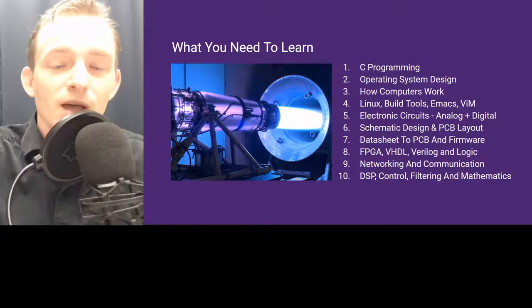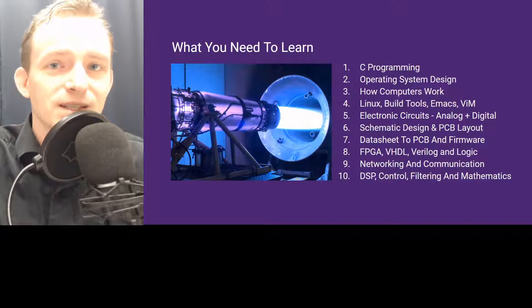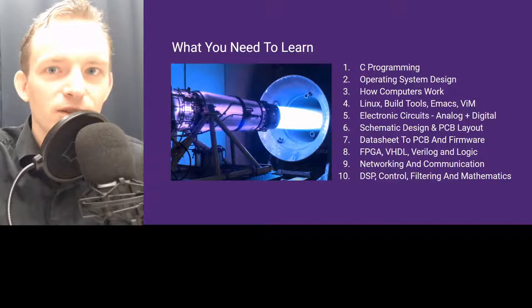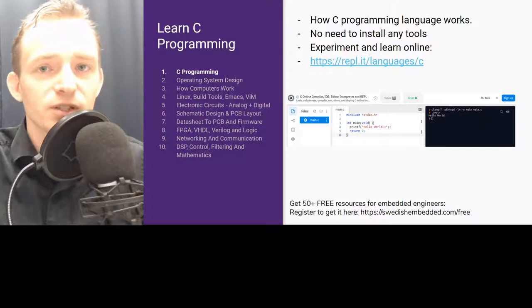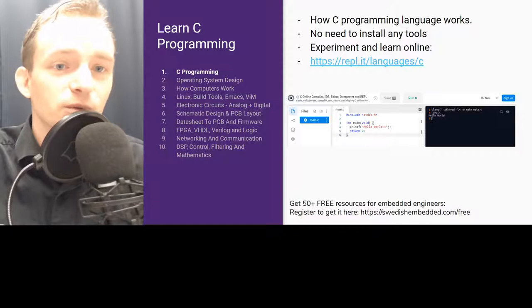Number one is C programming. It's the most common language in the world for embedded systems. Everywhere you look, every single computer that you use, somewhere down there is C language. Something at the bottom close to hardware is coded in C, and then all the other languages and subsystems are put on top of that. If you're an absolute beginner, you can go online and look at REPL.IT, where you can experiment with C without installing any compilers.